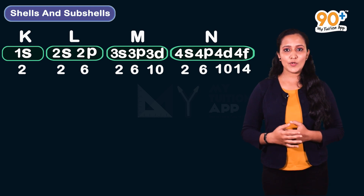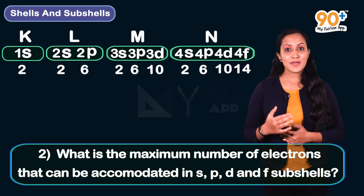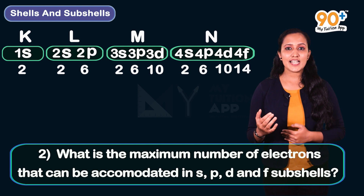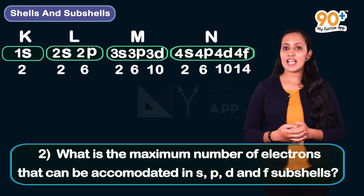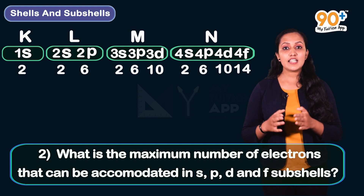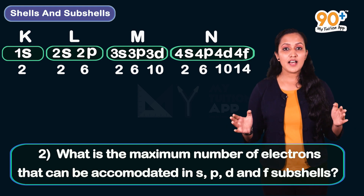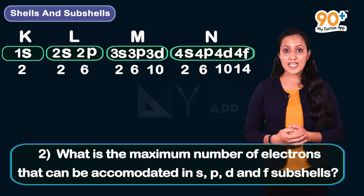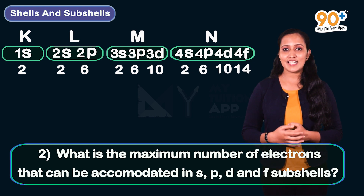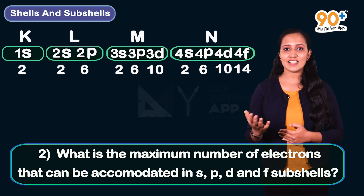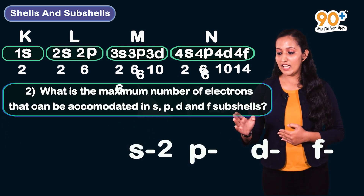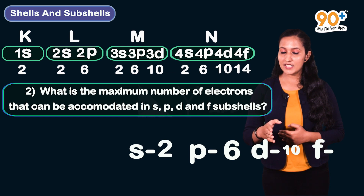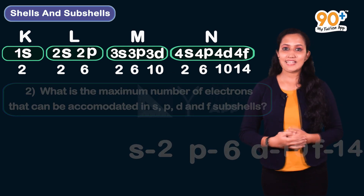Second question: What is the maximum number of electrons that can be accommodated in S, P, D, and F subshells? As discussed in the flowchart, the answer is: S = 2, P = 6, D = 10, and F = 14.